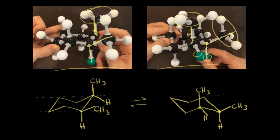When this compound underwent a ring flip, at carbon one our methyl group was up-axial and is still up relative to the plane of the ring, but now it is equatorial. At carbon two, our methyl group was up-equatorial and is now up-axial. So for both chair conformations, the methyl groups are on the same side — that's why we say cis. In terms of which one is the more stable conformation, for both of these we have one methyl group axial and one methyl group equatorial, so they are equivalent and the same in terms of energy.